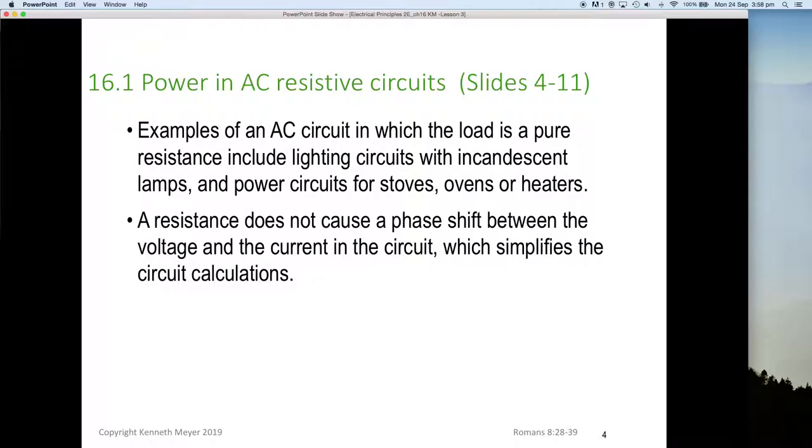Let's get started with power in AC resistive circuits. Examples of an AC circuit in which the load is purely resistive include lighting circuits with incandescent lamps, and power circuits for stoves, ovens, and heaters—anything that uses a resistor to turn electricity back into heat. A resistance does not cause a phase shift between the voltage and the current in the circuit, which simplifies the circuit calculations.